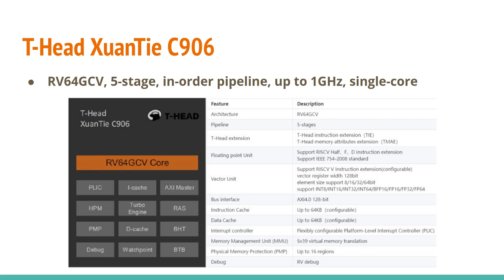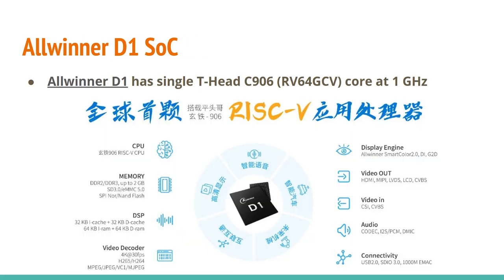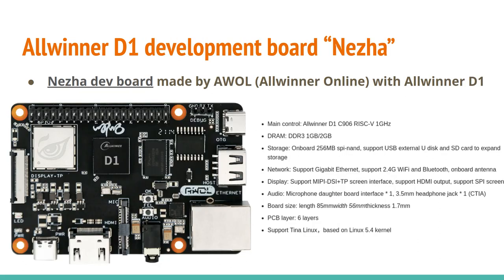On the lower end, THead also has the C906 core — a smaller in-order pipeline running at 1 GHz as a single-core system. This is being used in the recently announced Allwinner D1 SoC, meant to be a low-cost RISC-V single-core SoC. Allwinner has also produced a D1 development board called the Nezha, featuring the 1 GHz single-core D1, DDR3 memory, Wi-Fi and Ethernet, USB, and several other peripherals.